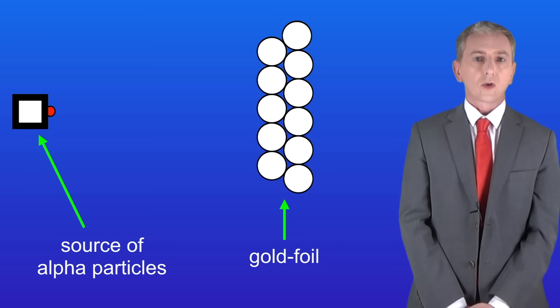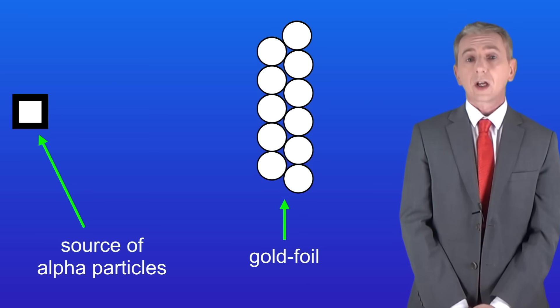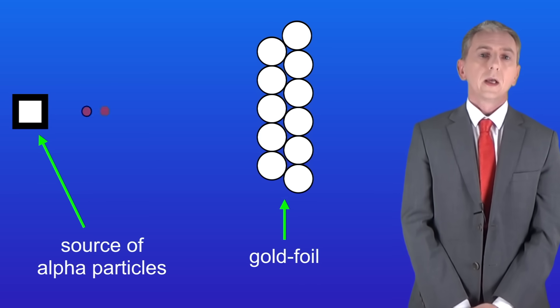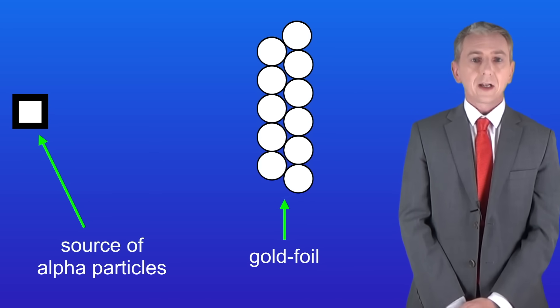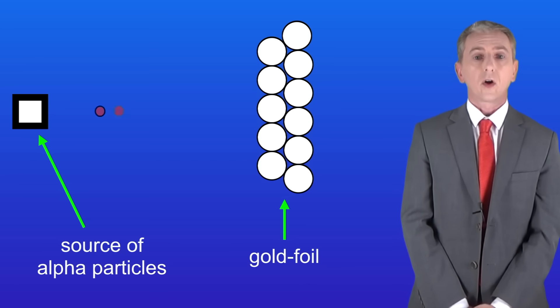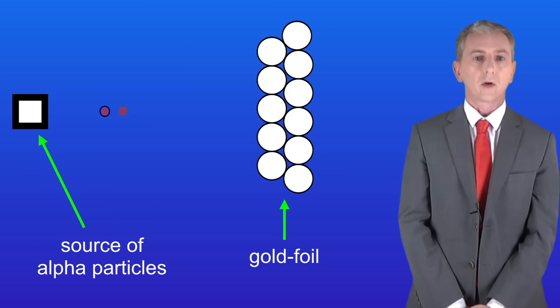The first thing they saw was that most of the alpha particles passed straight through the gold foil without changing direction. Sometimes an alpha particle was deflected—in other words it changed direction as it passed through the gold foil. And sometimes an alpha particle simply bounced straight back off the gold foil.